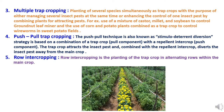Third is multiple trap cropping, in which several species are planted simultaneously as trap crops, with the purpose of either managing several insect pests at the same time or enhancing the control of one insect pest by combining plants. For example, use of a mixture of castor, millet, and soybean to control groundnut leaf miner, and the use of corn and potato plants combined as a trap crop to control wireworms in sweet potato fields.